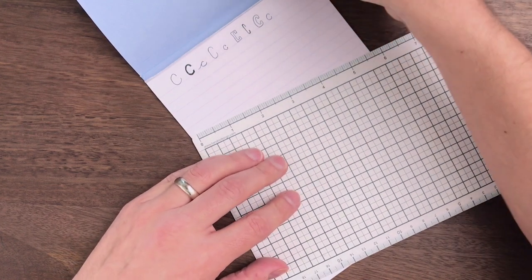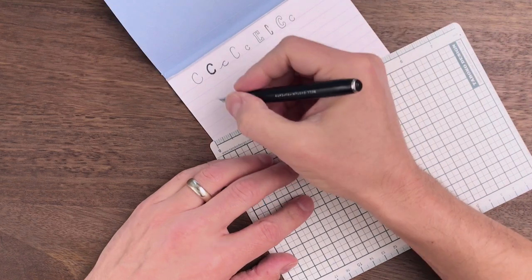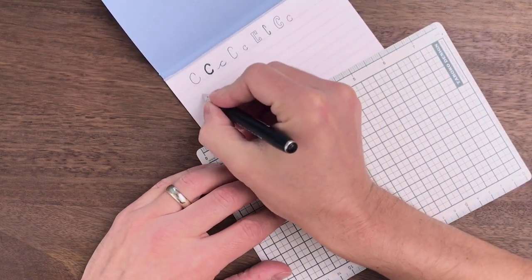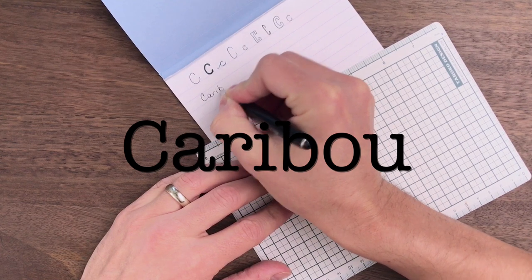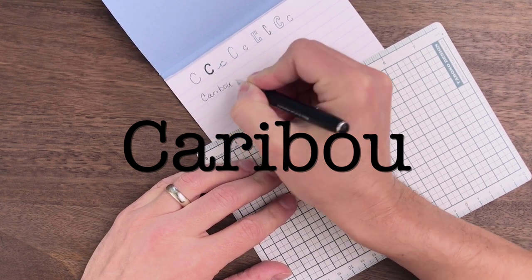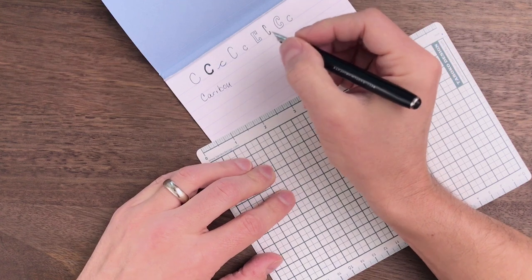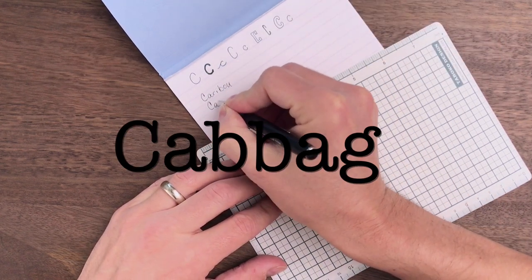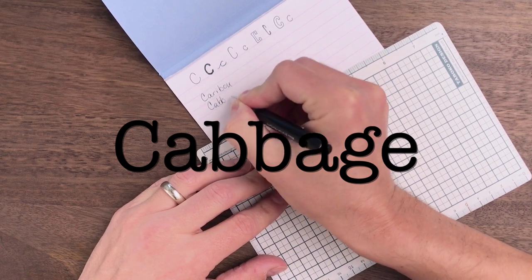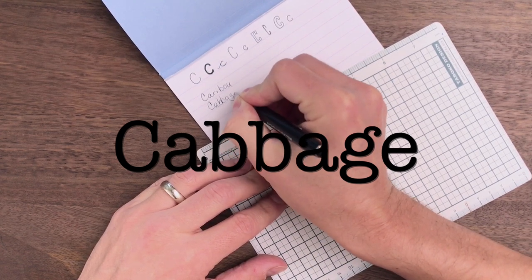The first word is caribou. That is C-A-R-I-B-O-U. The second word, cabbage, C-A-B-B-A-G-E.